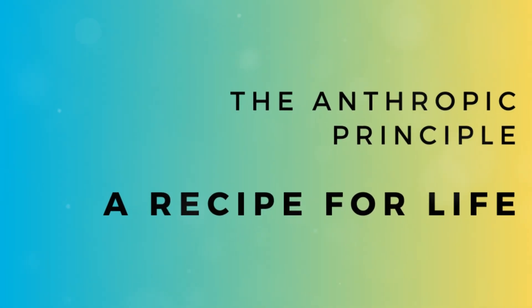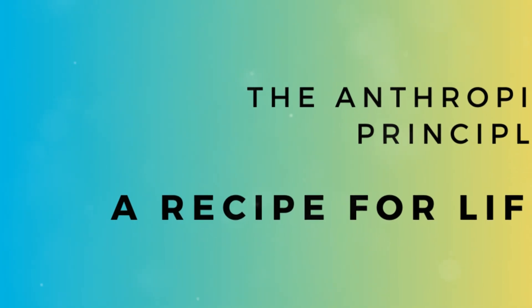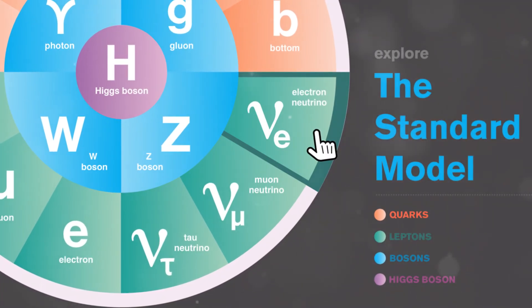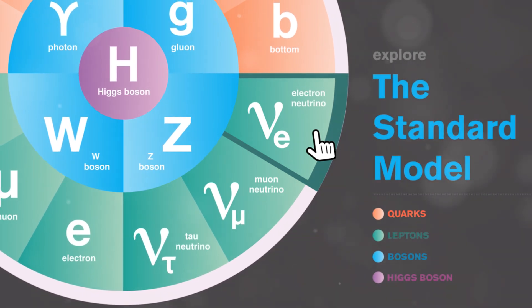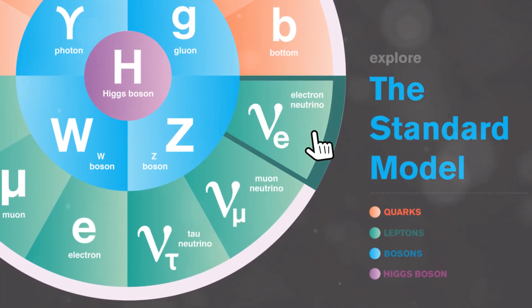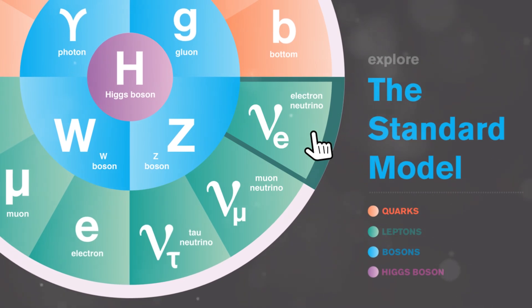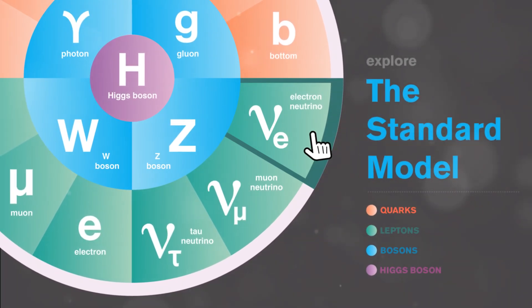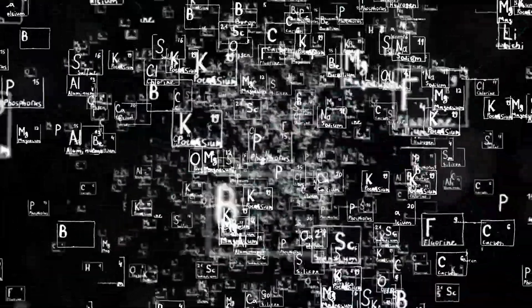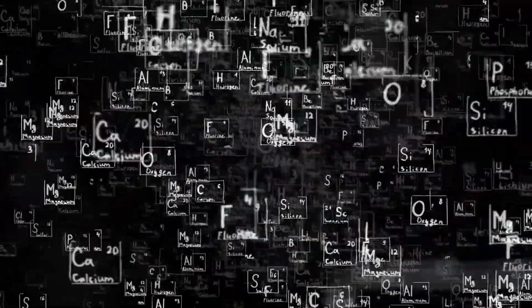Beyond the specific conditions on Earth, the very laws of physics themselves seem to be fine-tuned for life. These laws are governed by fundamental constants, such as the speed of light, the gravitational constant, and the mass of an electron. These constants have precise values that dictate how the universe behaves. Even slight variations in these values would result in a drastically different universe, one likely inhospitable to life as we know it.